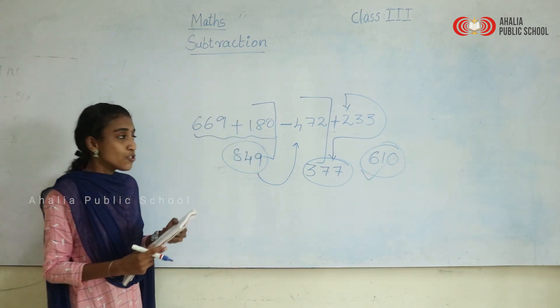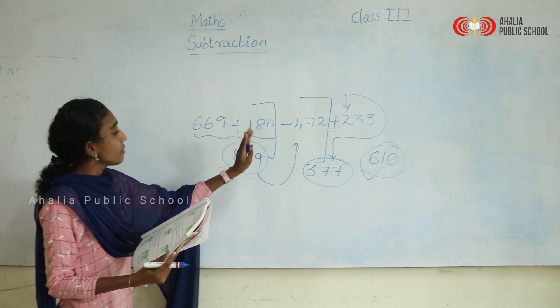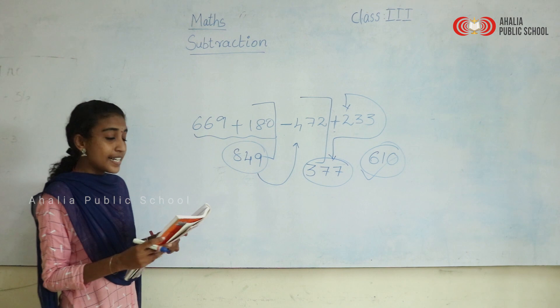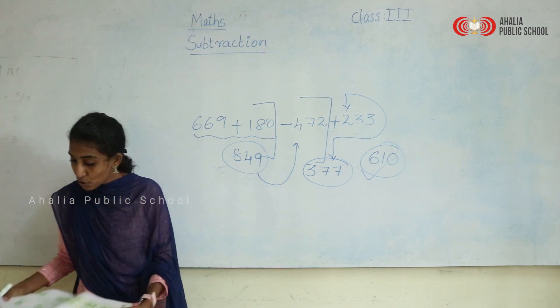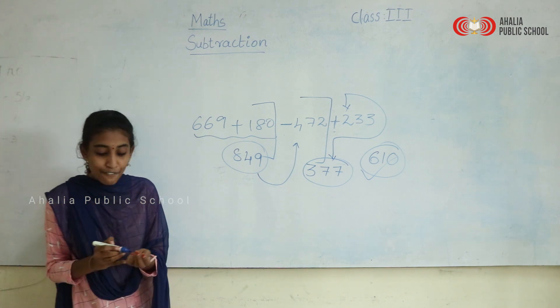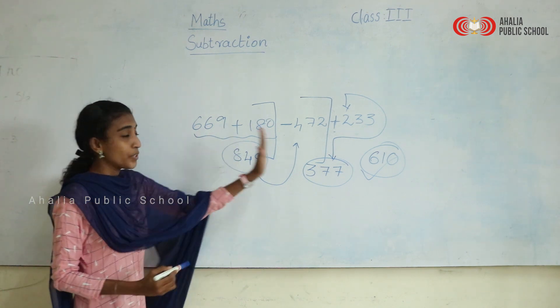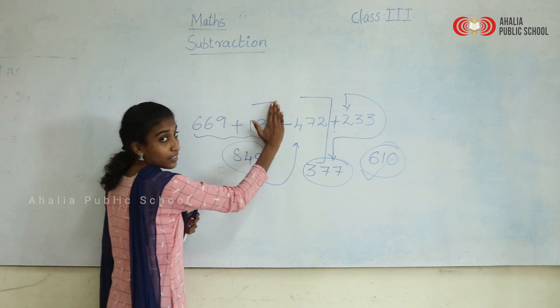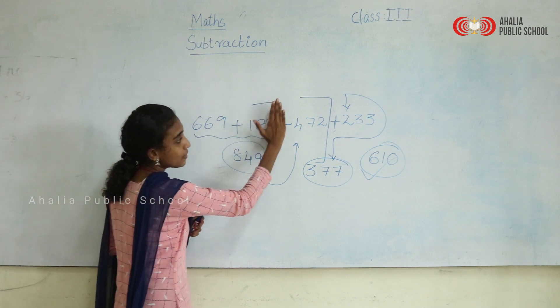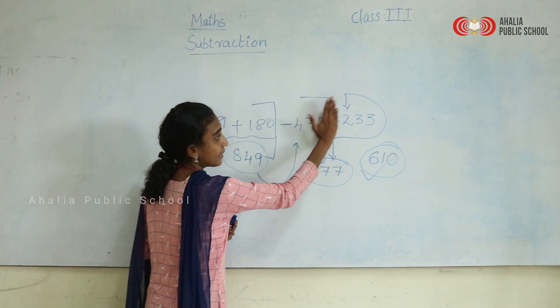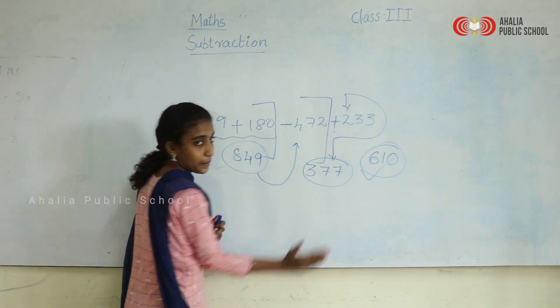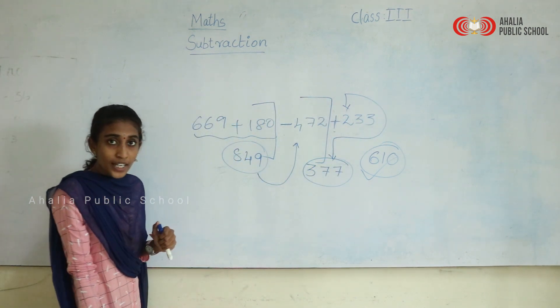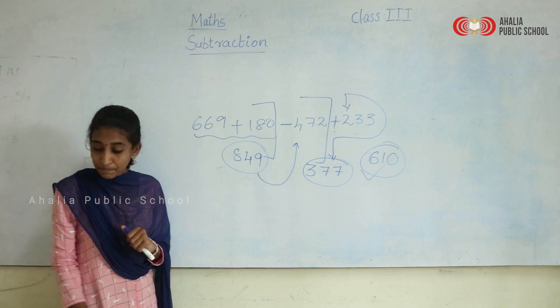So when you have addition and subtraction together, you move from left to right: first do this part, then the next part, then the next. First we do addition, get a new answer (the sum), then subtract the next number from that sum, then add or subtract the remaining number.